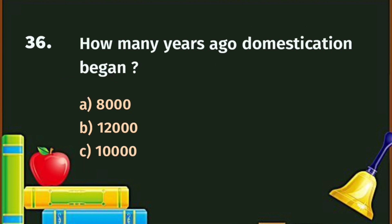Question number 36. How many years ago did domestication begin? A. 8,000, B. 12,000, C. 10,000. The correct answer is B - 12,000 years ago.